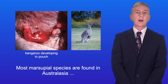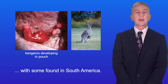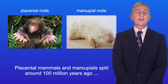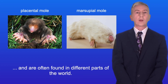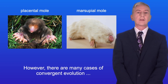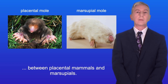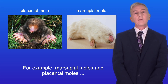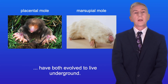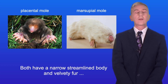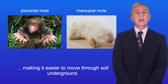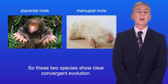Most marsupial species are found in Australasia, with some found in South America. Placental mammals and marsupials split around 100 million years ago and are often found in different parts of the world. However, there are many cases of convergent evolution between them. For example, marsupial moles and placental moles have both evolved to live underground. Both have spade-like forelimbs evolved for digging, and both have a narrow, streamlined body and velvety fur, making it easier to move through soil. These two species show clear convergent evolution.